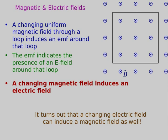An EMF drives current — moving charges. What gets charges moving? Electric fields exert force on charges whether they're moving or not. So if stationary charges start moving, there must be an electric field present. The EMF really means there's an electric field induced in that wire. So the bold statement here: a changing magnetic field induces an electric field.